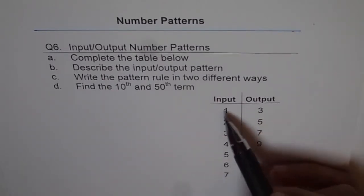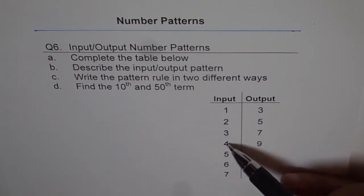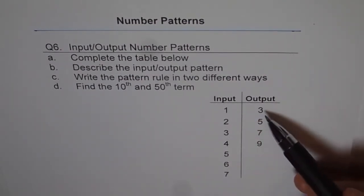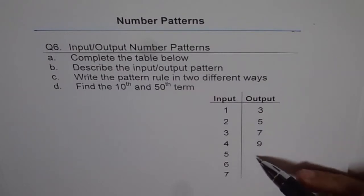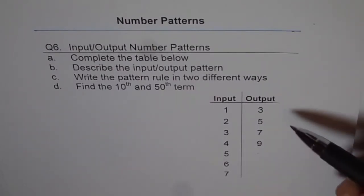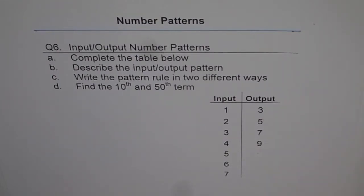So here is the Input-Output Pattern. Input 1, 2, 3, 4, 5, 6, 7. Output 3, 5, 7, 9. You need to fill this up. And you can see the pattern. It is going up by twos and you can easily fill it up. So complete the table is easy.